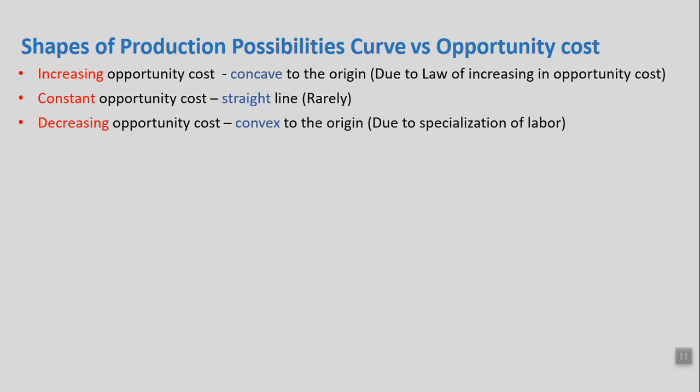What does this law say? It says that the more and more of a good is produced, factors producing it become marginally less and less productive, because resources are not equally effective in the production of all goods.